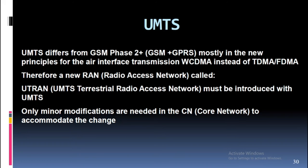UMTS differs from GSM Phase 2+, GSM, and GPRS mostly in the new principles for the air interface transmission — WCDMA instead of TDMA-FDMA. Therefore a new Radio Access Network (RAN) called UTRAN (UMTS Terrestrial Radio Access Network) must be introduced with UMTS. Only minor modifications are needed in the Core Network (CN) to accommodate the change.